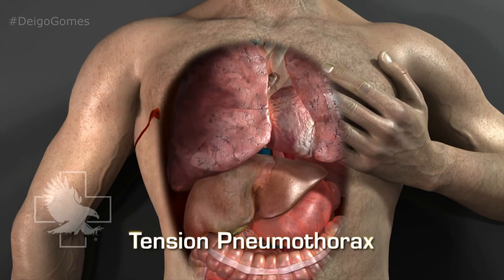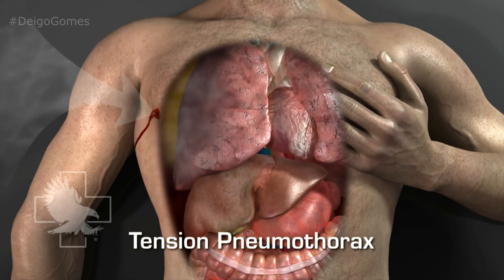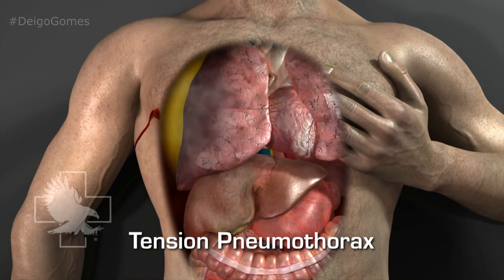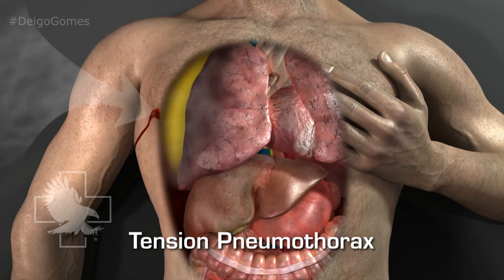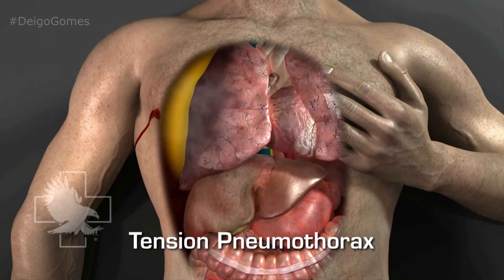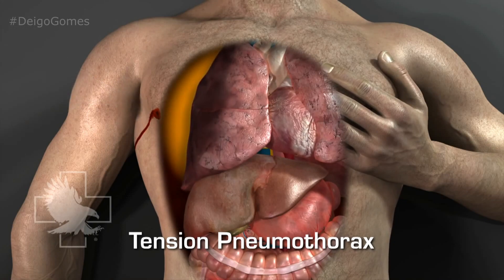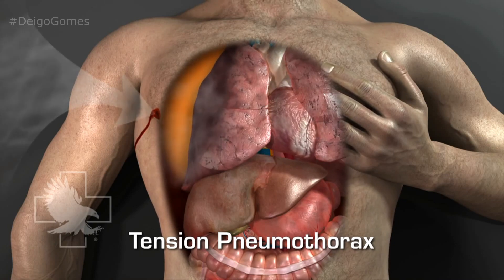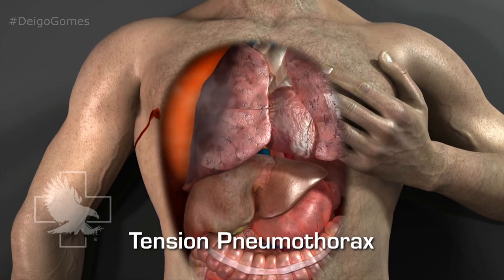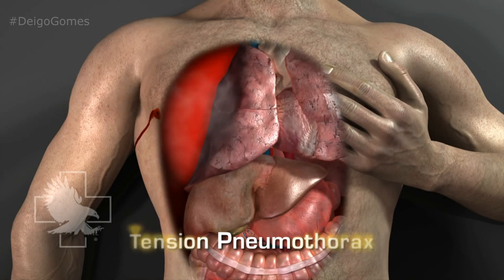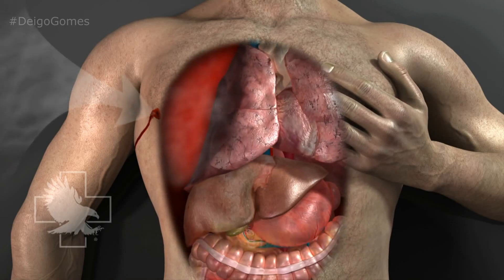A tension pneumothorax can develop with a sucking chest wound when the chest wall defect creates a one-way valve in which air can be drawn into the pleural space but cannot exit. Since the air cannot escape, the intrathoracic pressure increases and a life-threatening tension pneumothorax can develop.